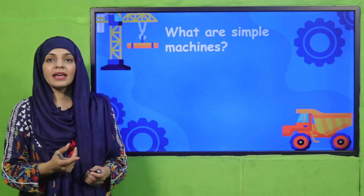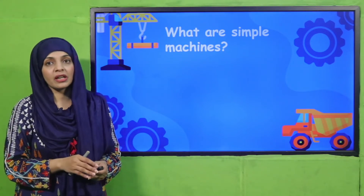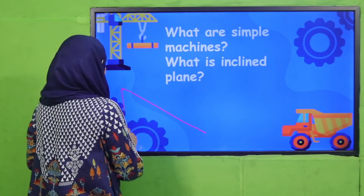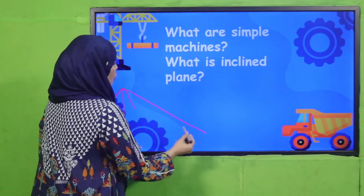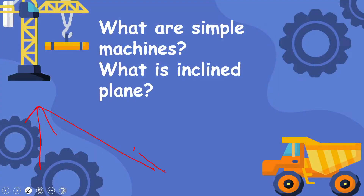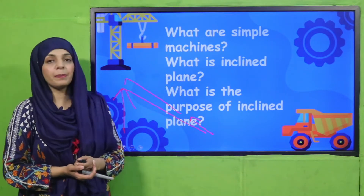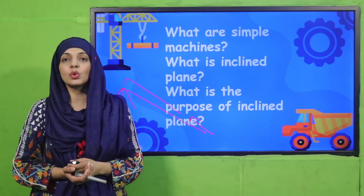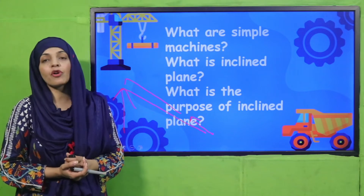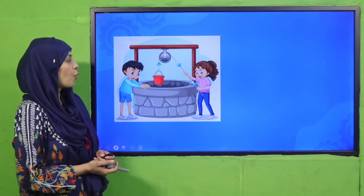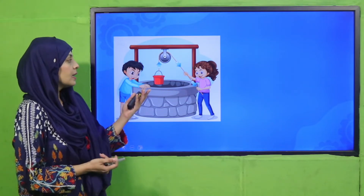A simple machine is anything that makes our work easier by changing the direction of the force. What is an inclined plane? An inclined plane is a flat surface inclined from one end. If you apply force upward, your weight will be easily lifted. The purpose of an inclined plane is to lift a heavy load easily from one level to another.